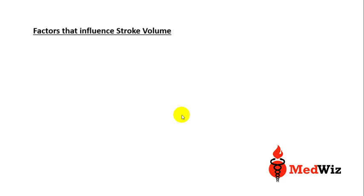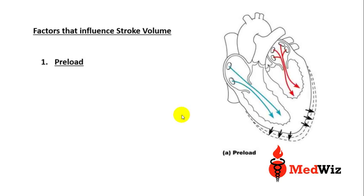What are the factors that influence stroke volume? The first is preload. Preload is the tension of the myocardial fibers at the end of diastole — it is like a pulling force on the myocardial fibers just at the end of diastole. When the ventricle gets filled by blood at the end of diastole, you get the tension of the myocardial fibers. This is what is called preload.